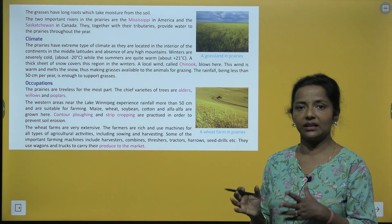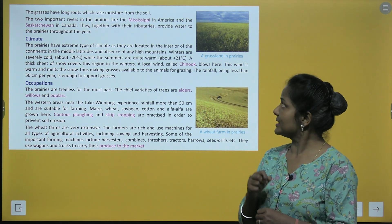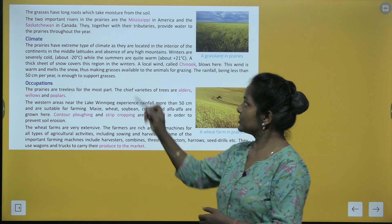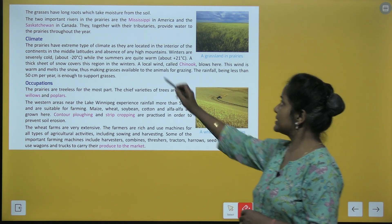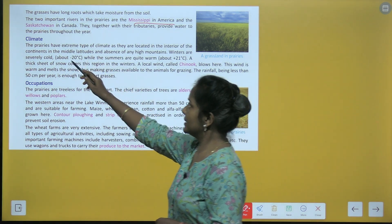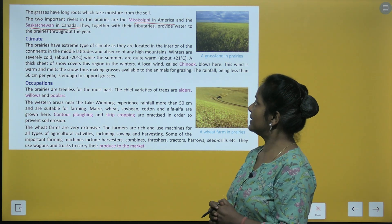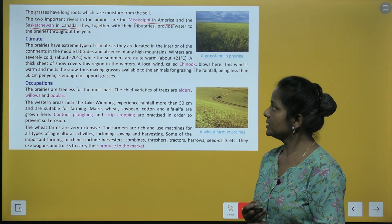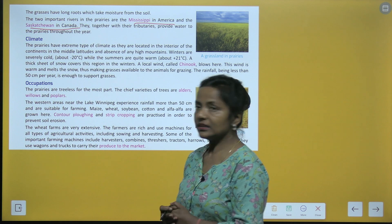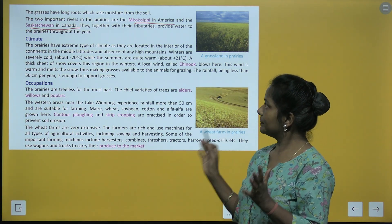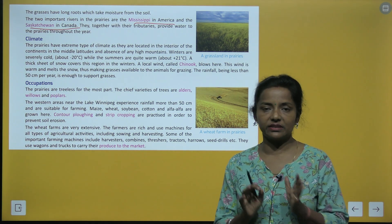Yehaan jo grasses ugti hain unke jo roots hote hain woh bahut lambe hote hain — woh soil se moisture ko kheenchte hain. The two important rivers in the prairies are the Mississippi in America and the Saskatchewan in Canada. They together with their tributaries provide water to the prairies throughout the year.